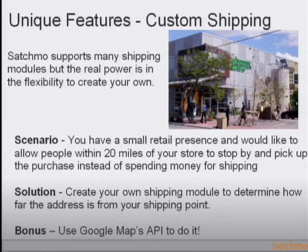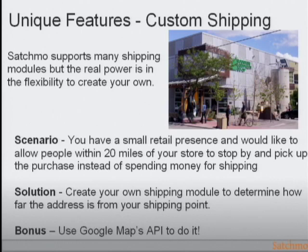One thing I wanted to step through is: if you want to do some unique feature that Satchmo doesn't do right now, how would you go about it? This specific example is if you have a physical brick-and-mortar store and you want to allow people to order over the web but walk in and pick it up so they don't pay for shipping. I used the Google Maps API to build this, which was a good chance to learn something new.